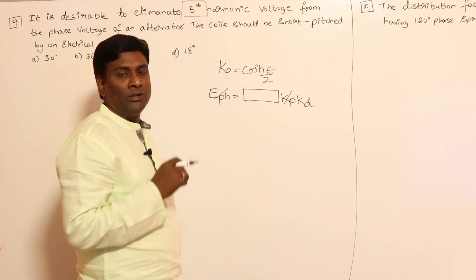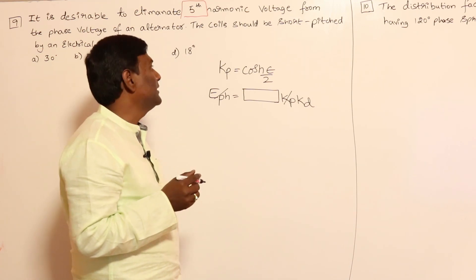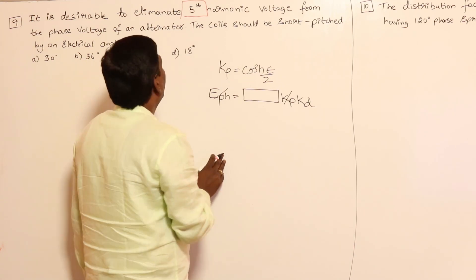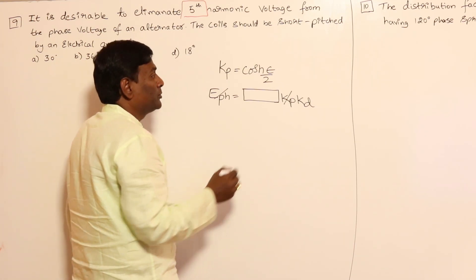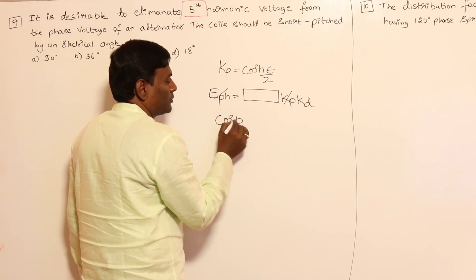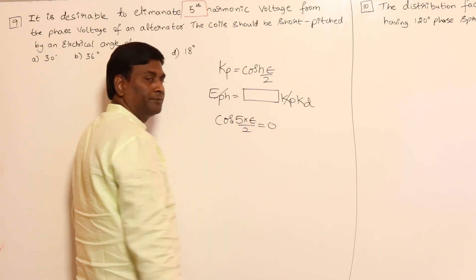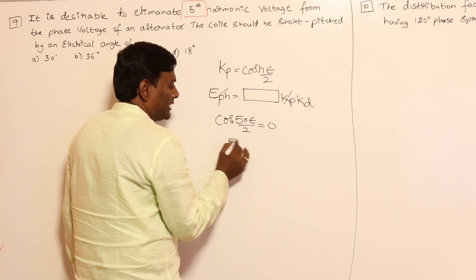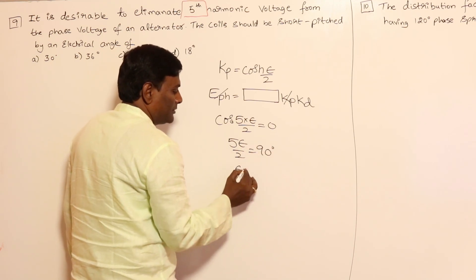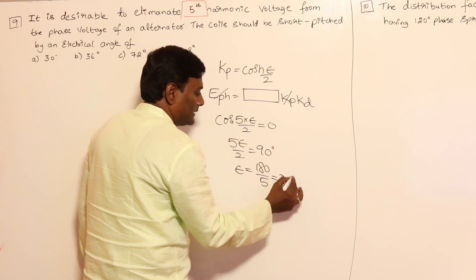To eliminate the fifth harmonic, cos(5ε/2) should be zero. So 5ε/2 must equal 90 degrees, which gives ε = 180/5 = 36 degrees. Therefore, 36 degrees is the correct answer for the short-pitching angle needed to eliminate the fifth harmonic voltage.